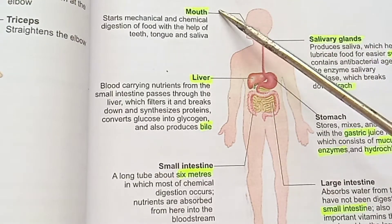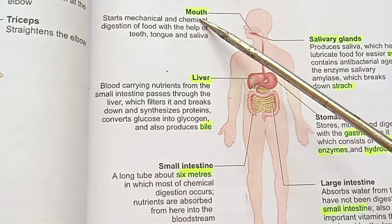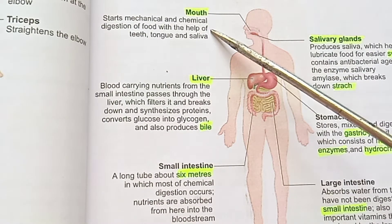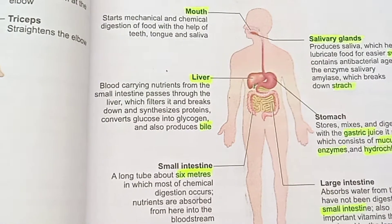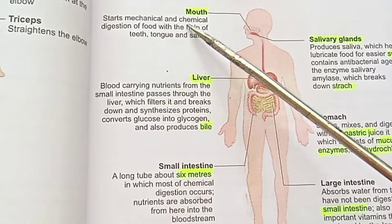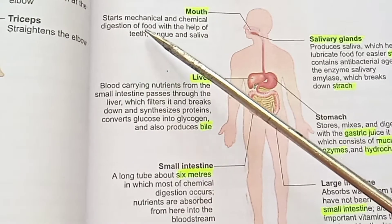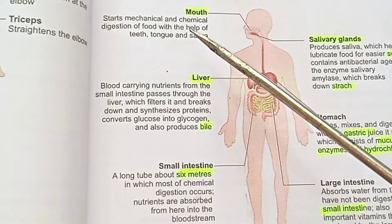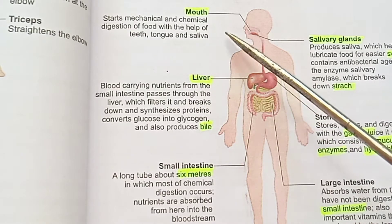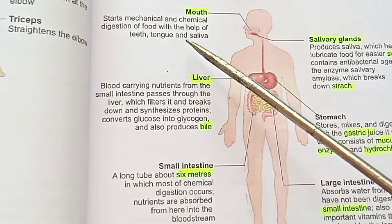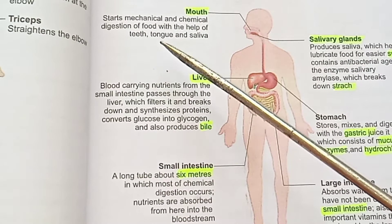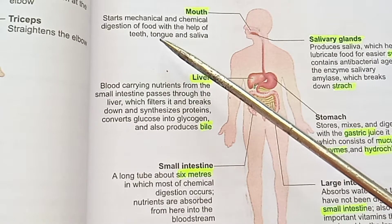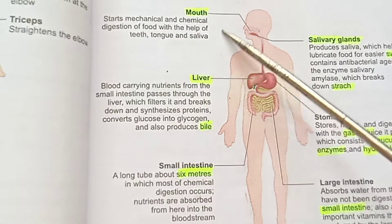The digestive system starts mechanical and chemical digestion of food with the help of teeth, tongue, and saliva.